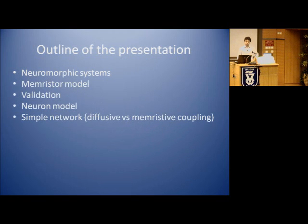I will briefly talk about neuromorphic systems and present a model for memristors that we developed at Politecnico di Torino. We validated it, and then I will show you the model of neurons that we consider. We shall analyze a simple network and try to see the role of memristors in synchronization between neurons and the differences when we compare diffusive coupling to memristive coupling.